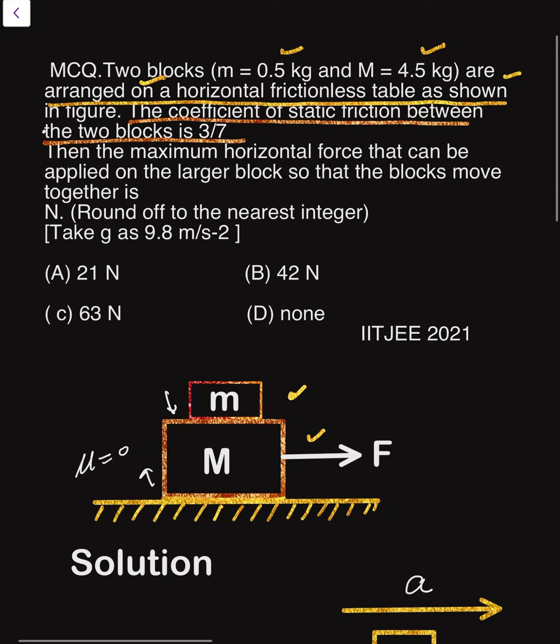The coefficient of static friction μs is given as 3/7. Find the maximum horizontal force that can be applied on the larger block so that the blocks move together. g is 9.8 m/s².